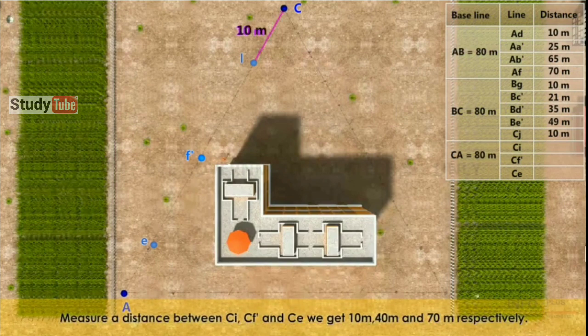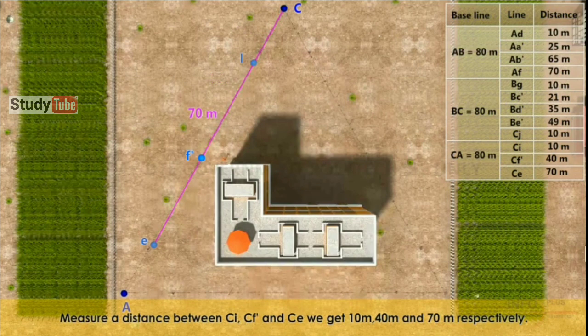The distances CI, CF', and CE are measured, giving values of 10m, 40m, and 70m respectively.